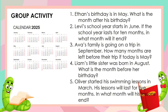Now, let's have a group activity. Number 1: Ethan's birthday is in May — what is the month after his birthday? Number 2: Lavi's school year starts in June — if the school year lasts for 10 months, in what month will it end? Number 3: Ava's family is going on a trip in September — how many months are left before their trip if today is May? Number 4: Liam's little sister was born in August — what is the month before her birthday? And lastly, Number 5: Oliver started his swimming lessons in March — his lessons will last for 5 months, so in what month will his lessons end?